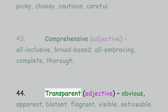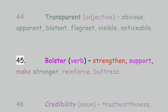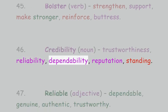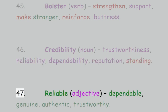44. Transparent, adjective: obvious, apparent, blatant, flagrant, visible, noticeable. 45. Bolster, verb: strengthen, support, make stronger, reinforce, buttress. 46. Credibility, noun: trustworthiness, reliability, dependability, reputation, standing.